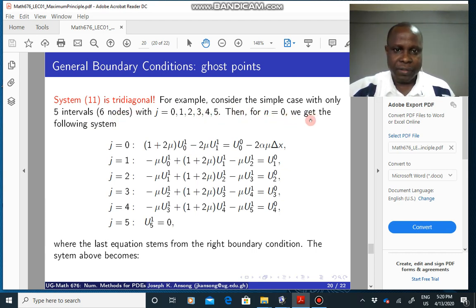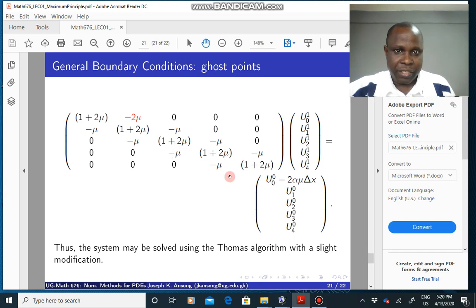For n equals 0, for instance, plug these j's into the system and you end up with these guys. So these are obtained from system 11. And so you have this, which you can put in the form of a matrix, and that gives you the system. So you can see that the system is really tridiagonal, and you can solve it with the Thomas algorithm. You just have to make slight modifications because unlike the previous one, here you now have a minus 2 mu instead of just a minus mu. So you just make a slight adjustment and you can use the Thomas algorithm to solve it.